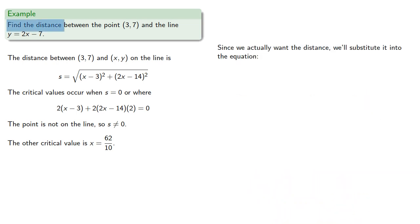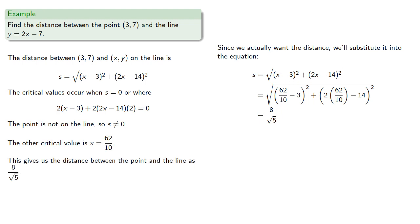Since we want the actual distance, we'll substitute into the equation and find 8/√5. And this gives us the distance between the point and the line. And again, you can reduce this if you want to, but this is a calculus class, not arithmetic.